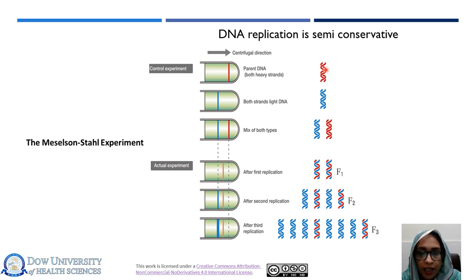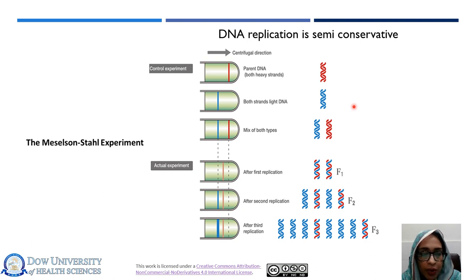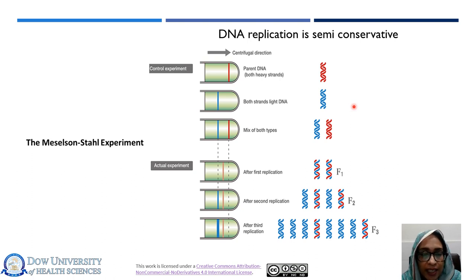The cells were then removed from N15 nitrogen and put into N14 nitrogen for one to two rounds of cell division. After the first round of cell division, samples were taken and DNA was isolated from each sample. The scientists were able to distinguish DNA of different densities based on the concept of cesium chloride density gradient centrifugation.